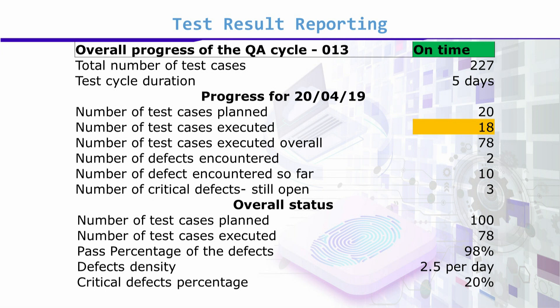Overall stats: number of test cases planned 100, number executed 78, pass percentage of defects 98%, defect density 2.5 per day. You have given 2 on that. Now you may ask: total test cases were 227 but overall planned shows 100 — that is because 100 is your plan for the sub-cycle, while 227 is the total shown in overall progress. 78 test cases have been executed. Critical defects percentage is 20%.